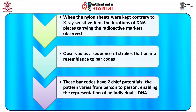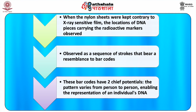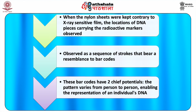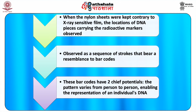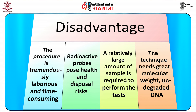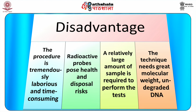These bar codes have two chief potentials: the pattern varies from person to person, enabling the identification of an individual's DNA, and the patterns are inherited, providing information about family relationships. However, there are some disadvantages of this method: the procedure is tremendously laborious and time consuming, radioactive probes pose health and disposal risks, a relatively large amount of sample is required, and the technique needs great molecular weight, undegraded DNA.